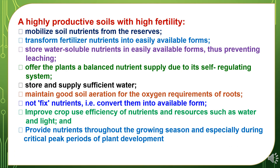Characteristics of highly productive soils with high fertility status: such soils mobilize nutrients from reserves and transform fertilizer nutrients into easily available forms. They store water-soluble nutrients in easily available forms, preventing leaching losses. They offer plants a balanced nutrient supply due to a self-regulating system. They store and supply sufficient water and maintain good soil aeration for the oxygen requirements of roots. Such soils convert nutrients into available form, improve crop use efficiency of nutrients and resources such as water and light, and provide nutrients throughout the growing season, especially during critical peak periods of plant development.